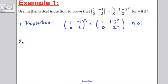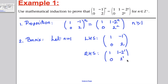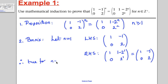Step 2: check the basis case. We let n equal 1 and work out the left-hand side, which is simply the matrix (1, -1, 0, 2). The right-hand side gives (1, 1 minus 2^1, 0, 2^1), which equals (1, -1, 0, 2) as hoped. Therefore, true for n equals 1.